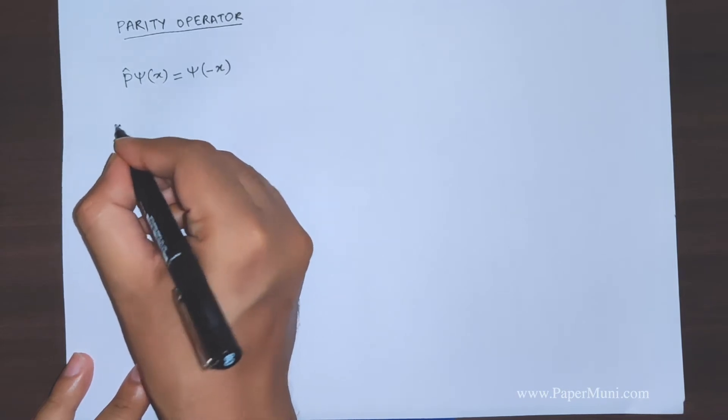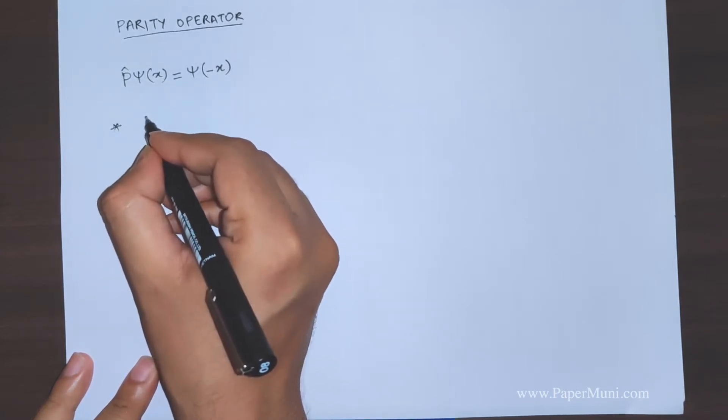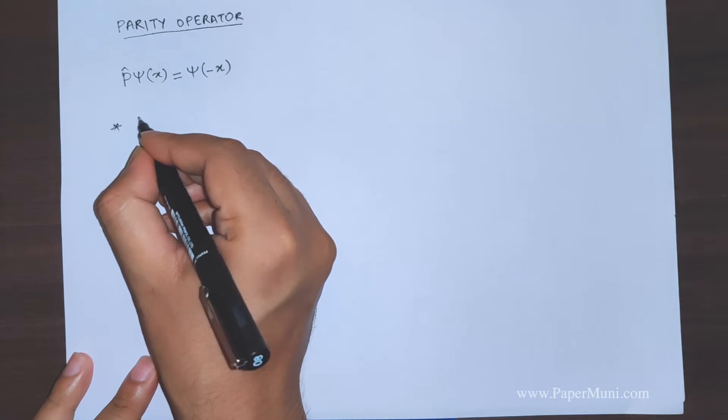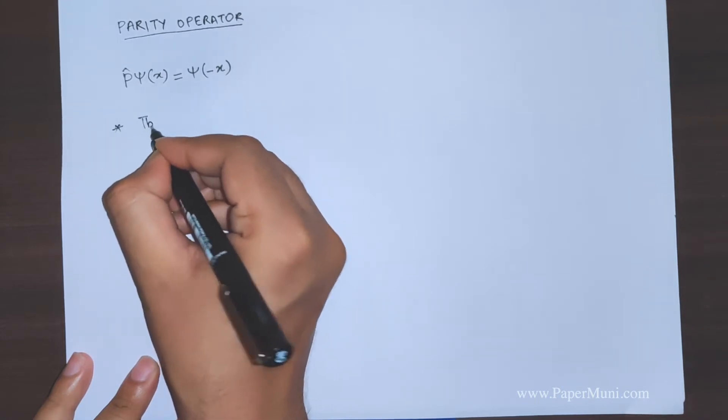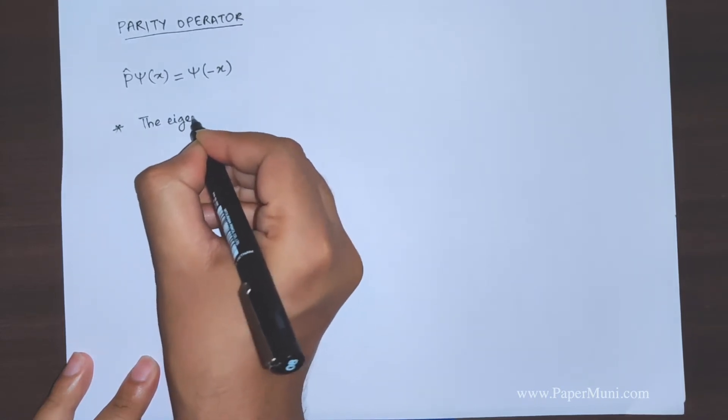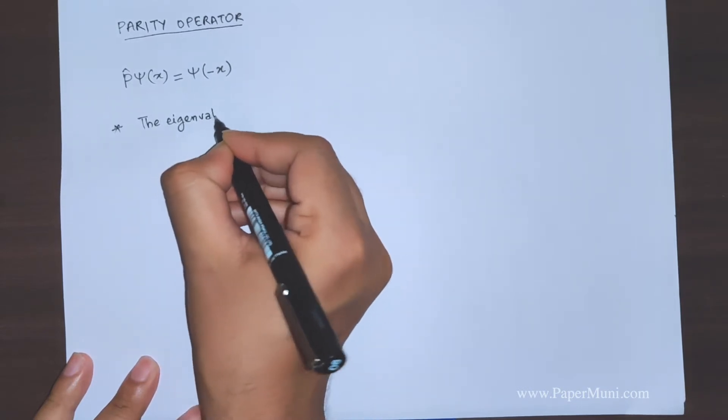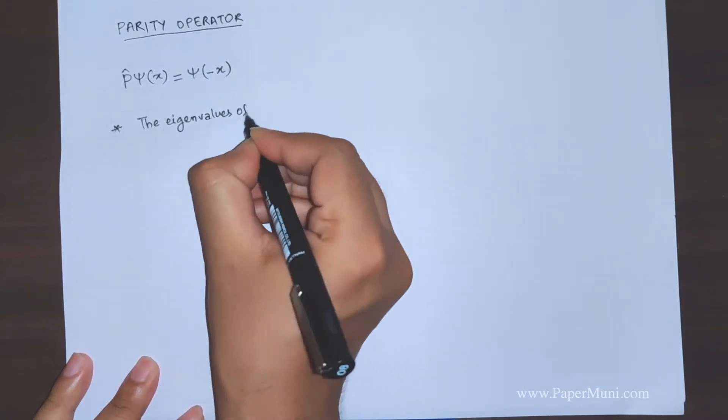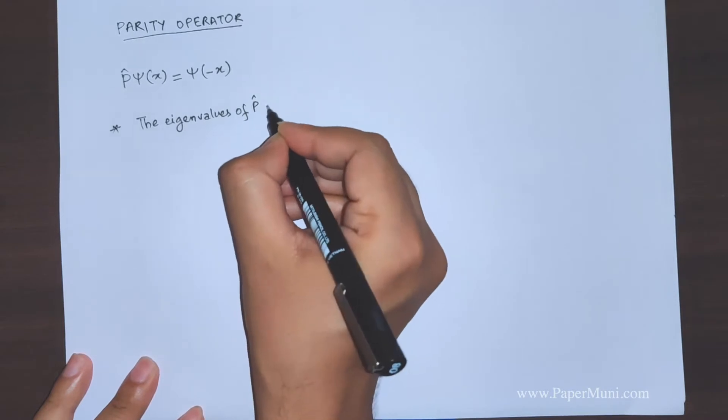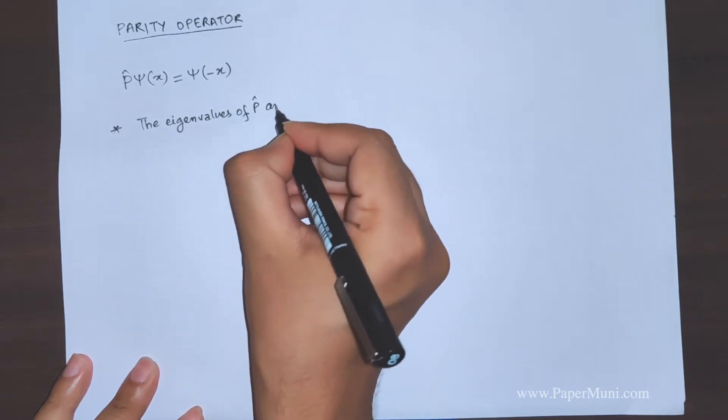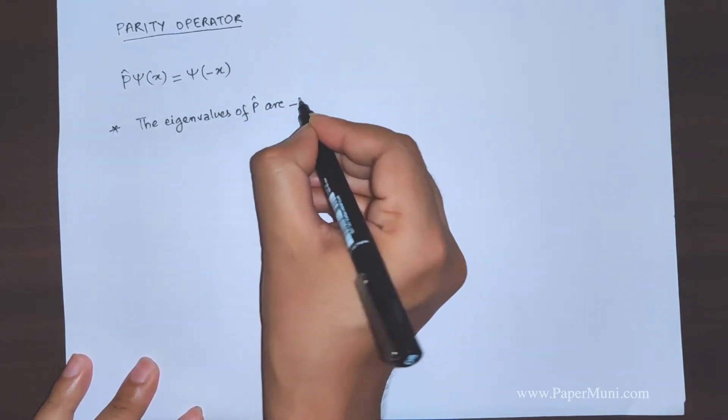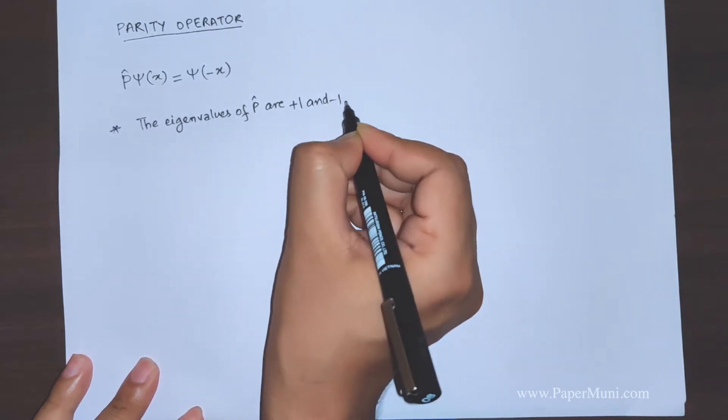Now I'll state without proof that the eigenvalues of the parity operator are plus one and minus one.